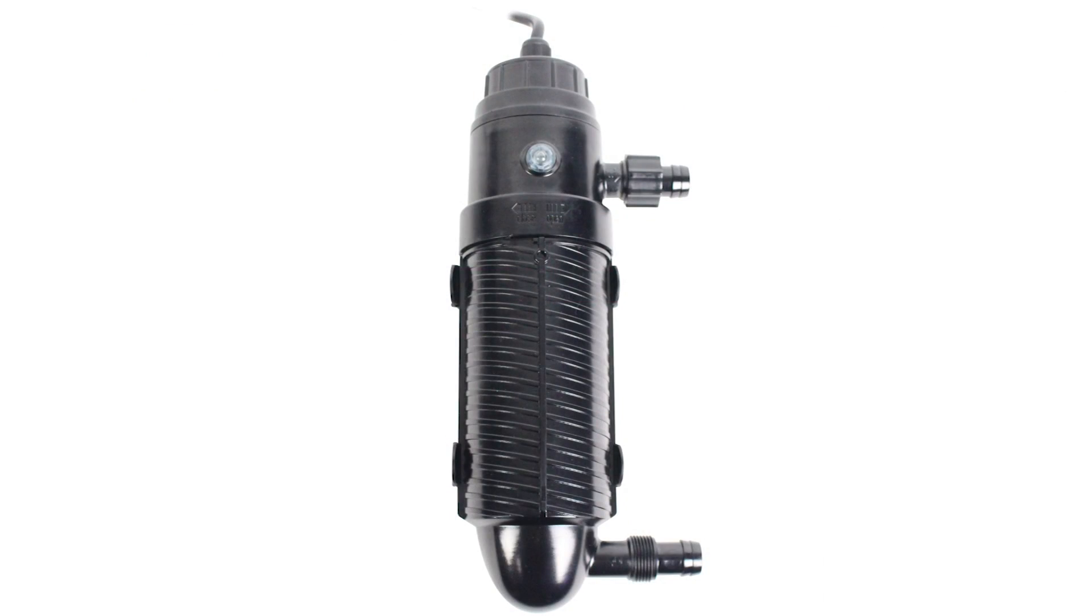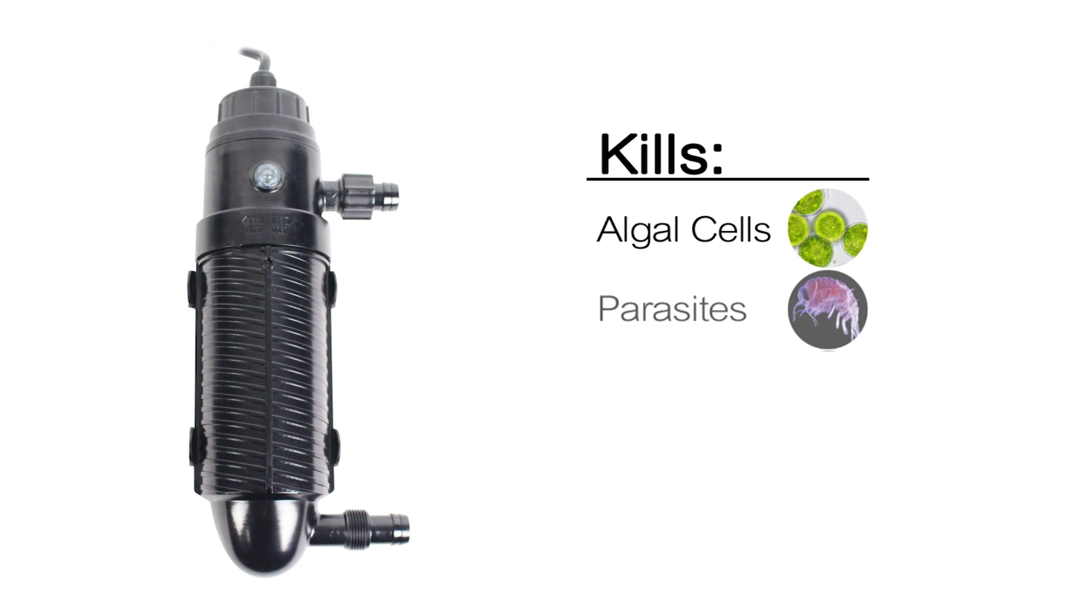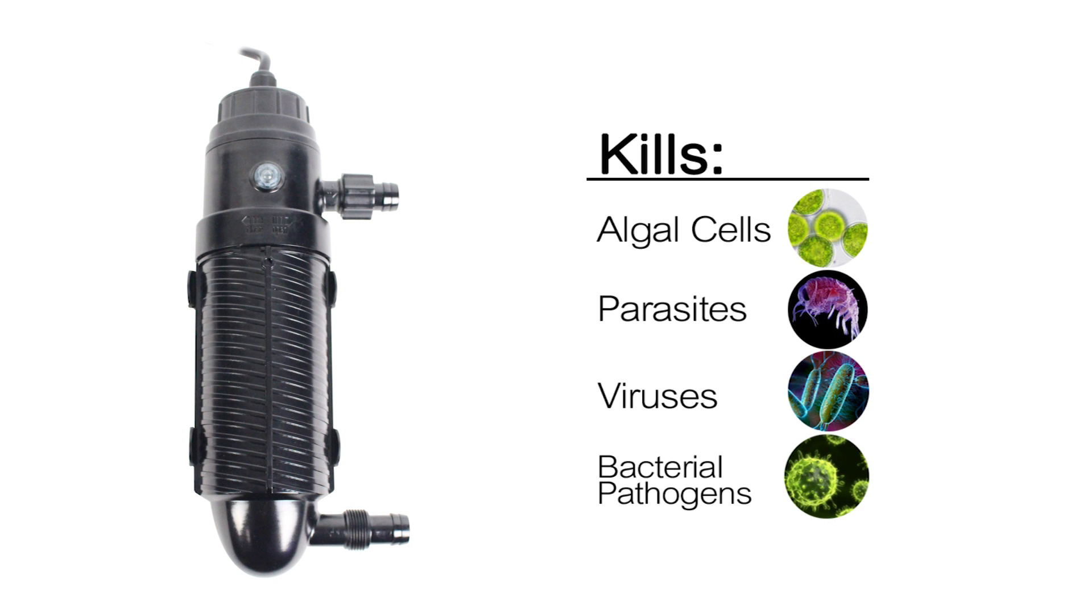The Turbo Twist features a spiral helix water path inside the sterilizer body. This design lengthens the exposure time to UV radiation, maximizing the destruction of algae cells, parasites, viruses and bacteria pathogens.